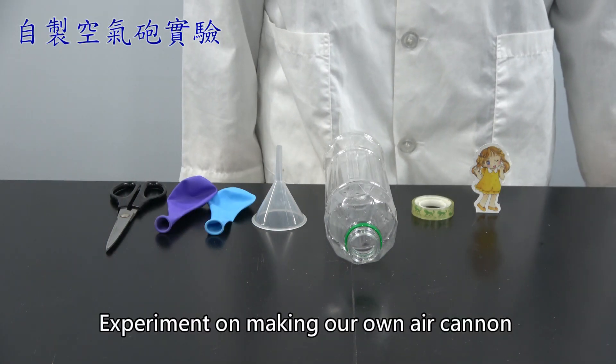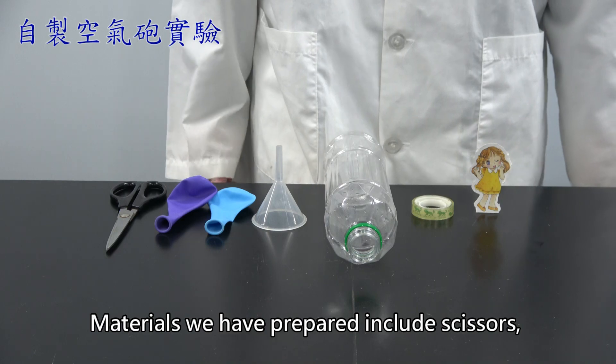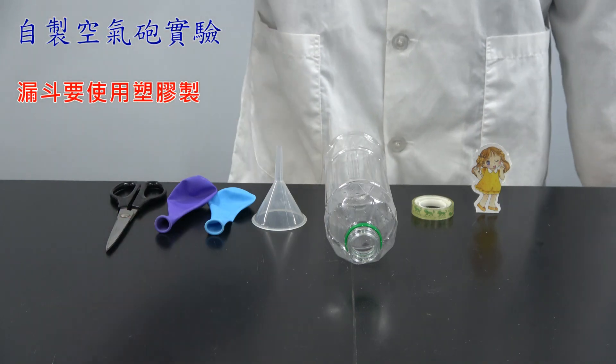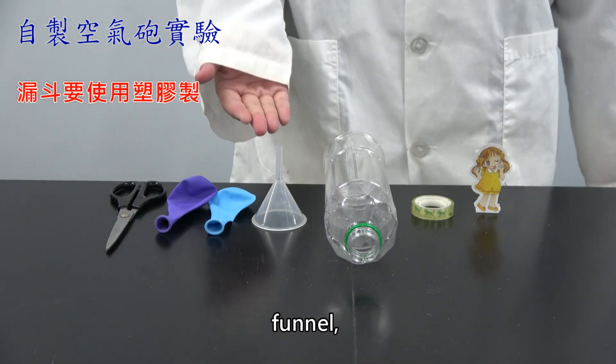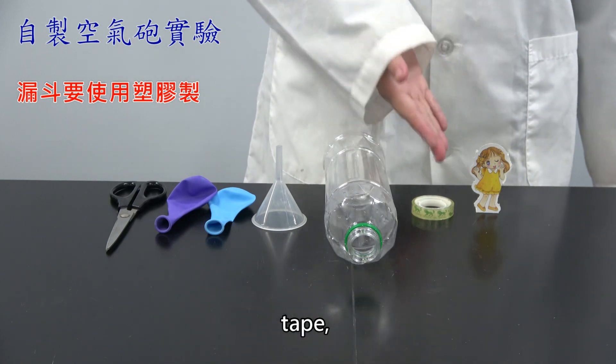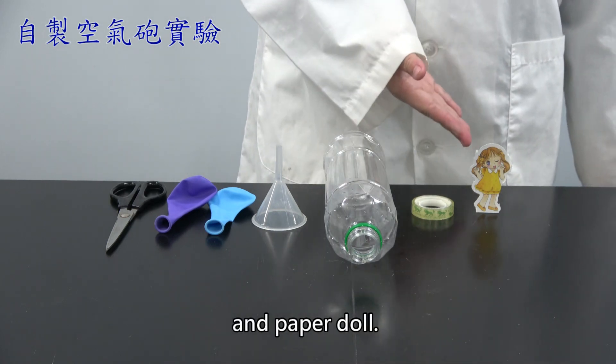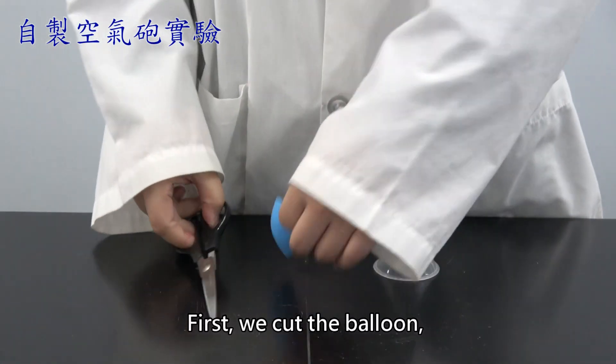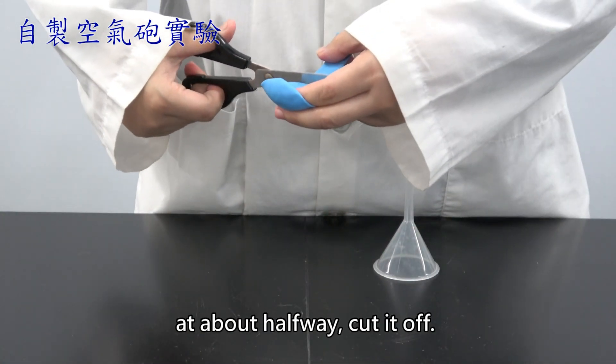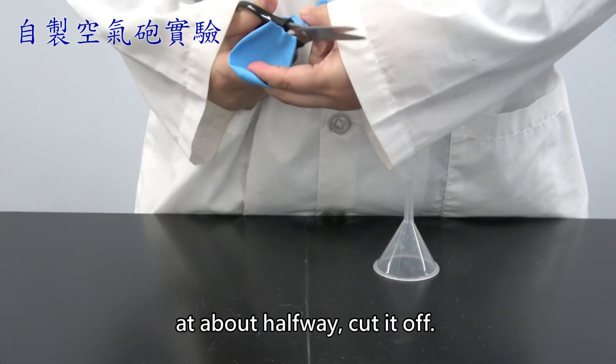Experiment on making our own air cannon. The materials we have prepared include scissors, balloon, funnel, bottle, tape, and paper doll. First, we cut the balloon at about halfway, cut it off.